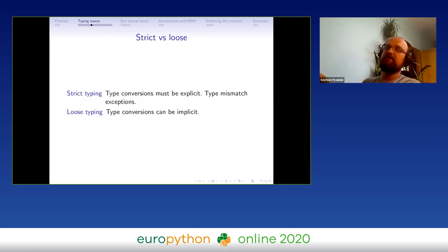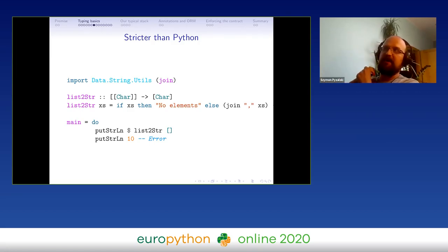To show you, I can show you a language that is stricter than Python. This is Haskell. In Haskell, trying to do something like this, trying to print an integer would cause an error. Trying to pass a list as a sole argument to a function is also an error. These are things that we are familiar with from Python, but we can't do them there because Haskell requires more discipline.